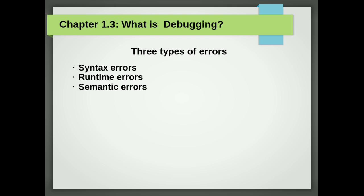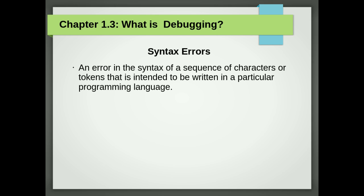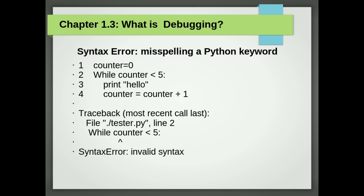We will look into more detail about the first error: syntax errors. Python can only execute a program if the program is syntactically correct; otherwise, the process fails and returns an error message. Syntax refers to the structure of a program and the rules about that structure. For example, misspelling a Python keyword can cause syntax errors. In the following example, the while keyword has been incorrectly spelt with a capital W. Note that in this case, the error message is a little misleading since the arrow points to the wrong part of the code.